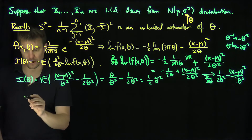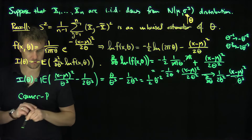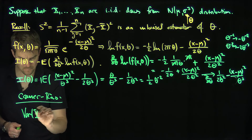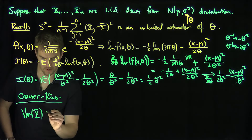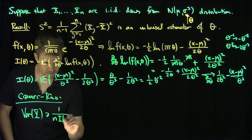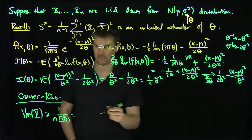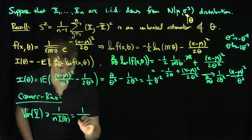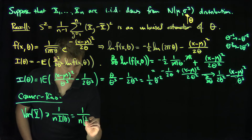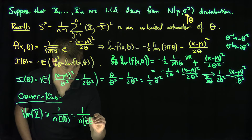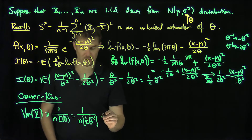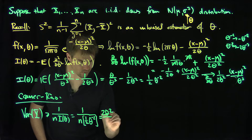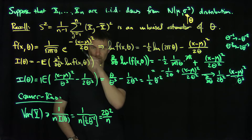The Cramér-Rao theorem tells us that the variance of any unbiased estimator is always greater than or equal to 1 over n times the Fisher information. In this case that bound is 1 over (n × ½θ⁻²), which equals 2θ²/n. So the Cramér-Rao lower bound is 2θ²/n.